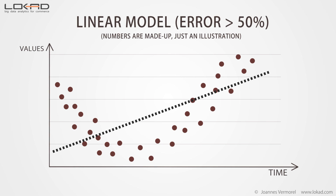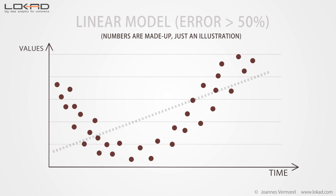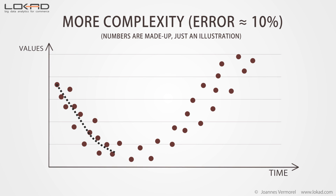Let's consider the following sample time series. We will illustrate the overfitting problem by considering successive statistical models. Let's start with a simple linear model. As you can see, the line isn't really well fitting the points of the time series. As a result, we have a large error, over 50%. This model does not really fit the data. We can increase the complexity of the model. We now have a model that follows roughly what looks like the local time series average. This model looks much better than the previous one. And indeed, the error has been divided by 5, now reaching 10%.